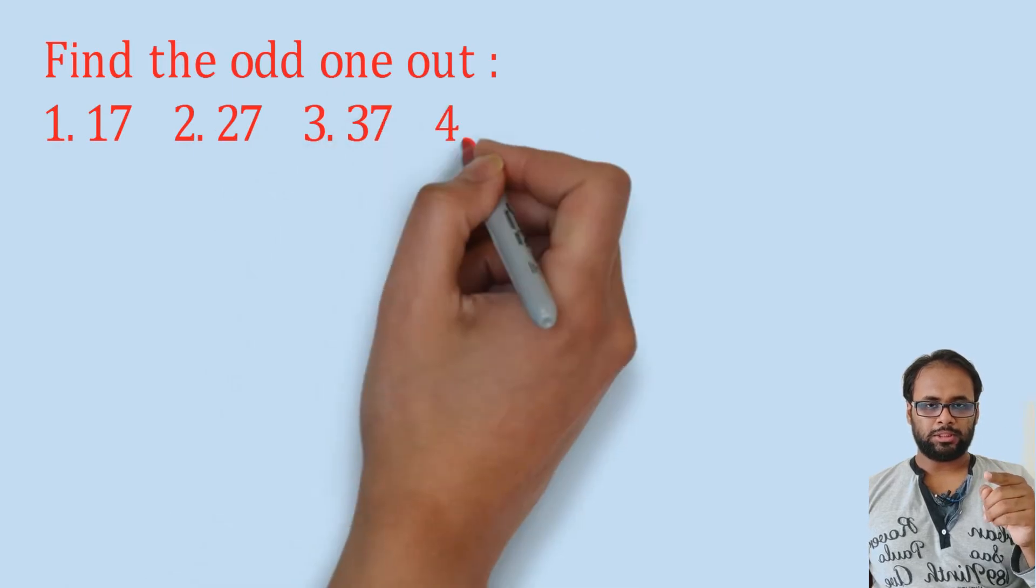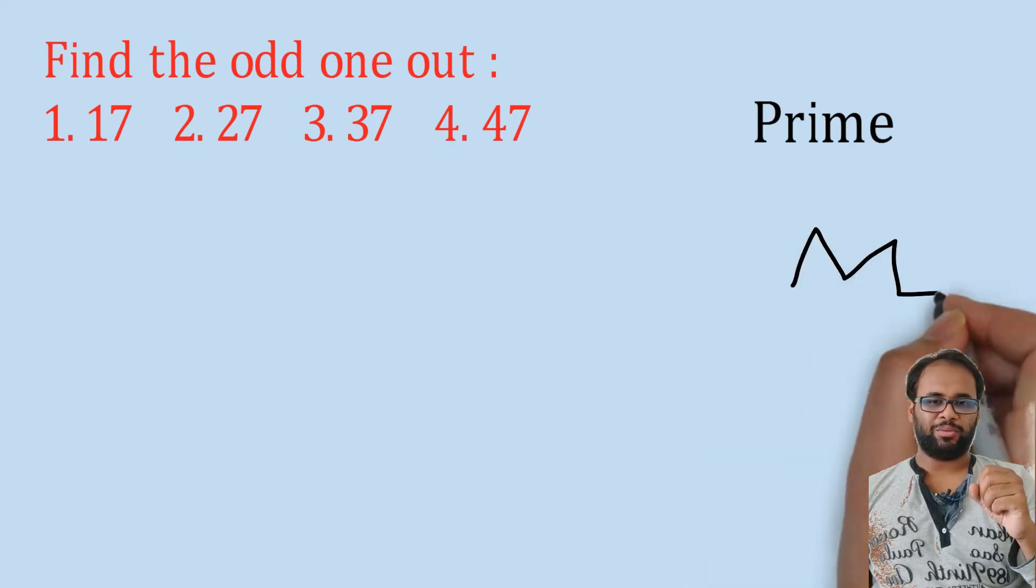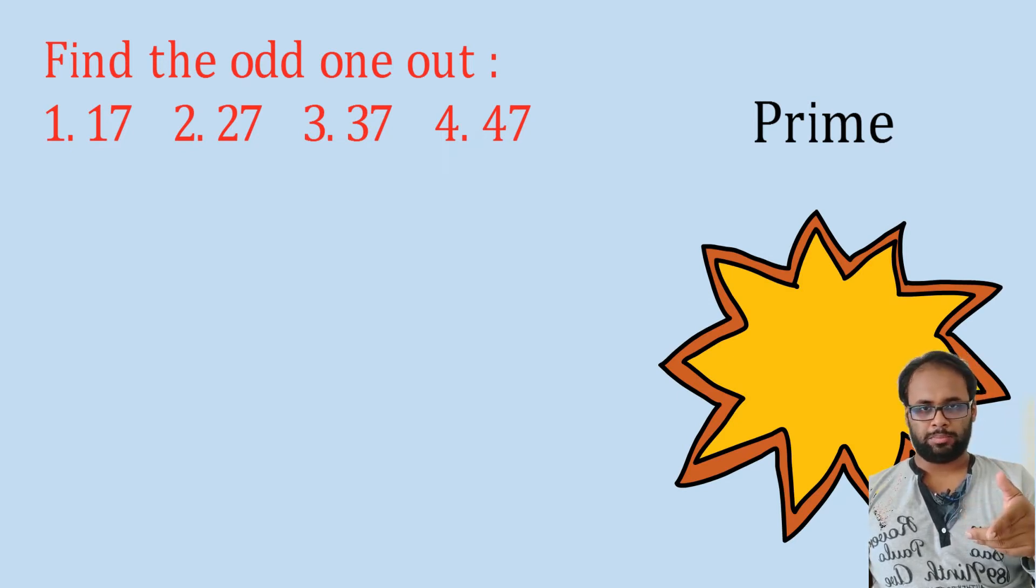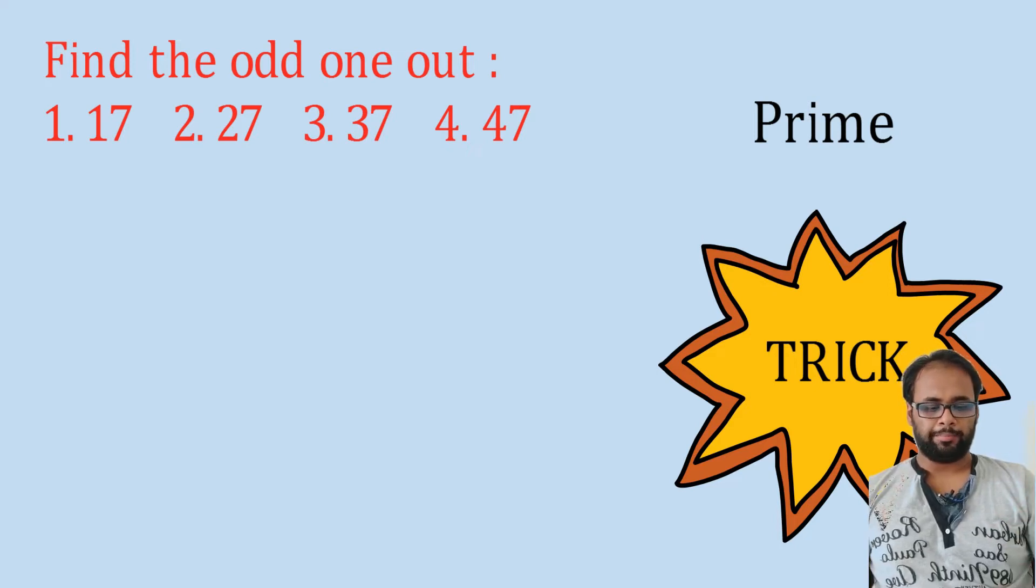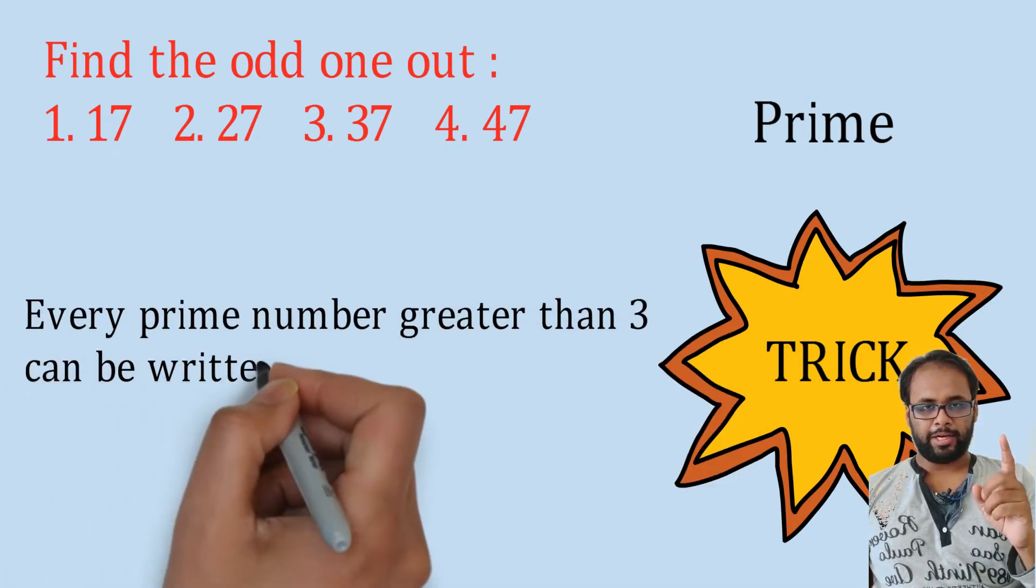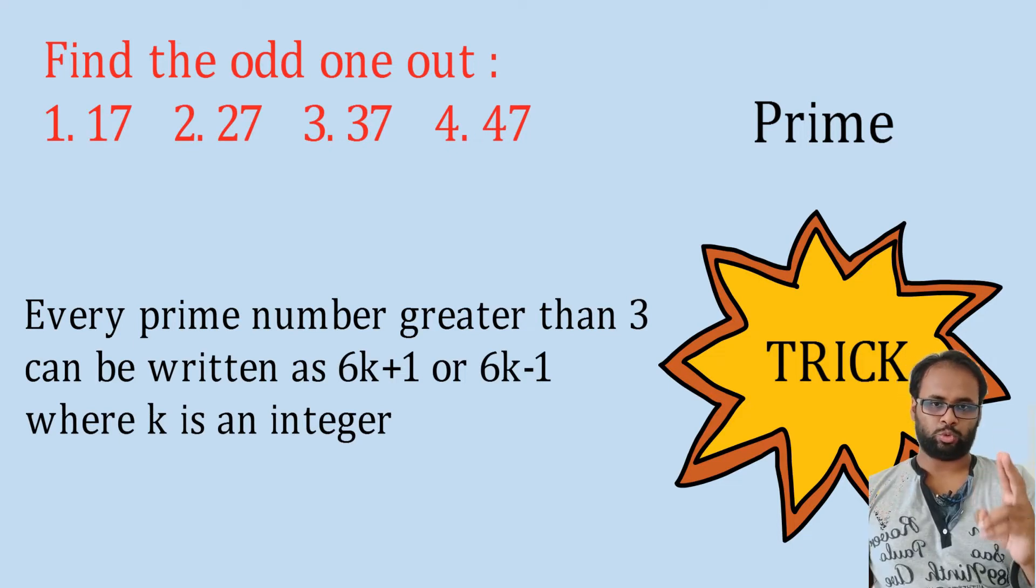The first question is find the odd one out: 17, 27, 37, 47. This looks like some sort of prime number combination because 17 is a prime number. Now, these are not very large numbers, but suppose in the exam you get very large numbers - how do you know whether it is prime or not? The trick for you is that every prime number greater than 3 can be written as 6k plus 1 or 6k minus 1, where k is an integer.